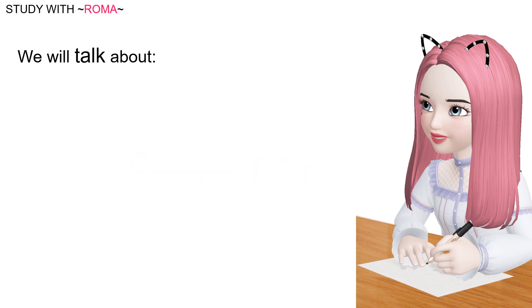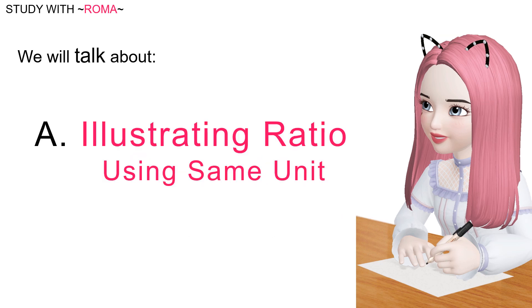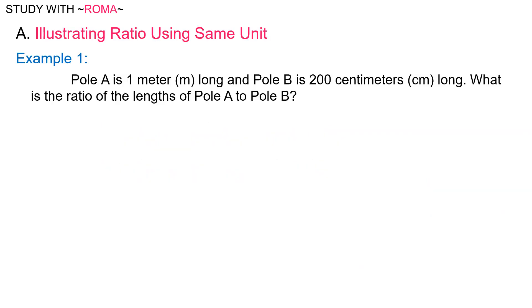Today we will talk about illustrating ratio using the same unit. For example, Pole A is 1 meter long and Pole B is 200 centimeters long. What is the ratio of the lengths of Pole A to Pole B?